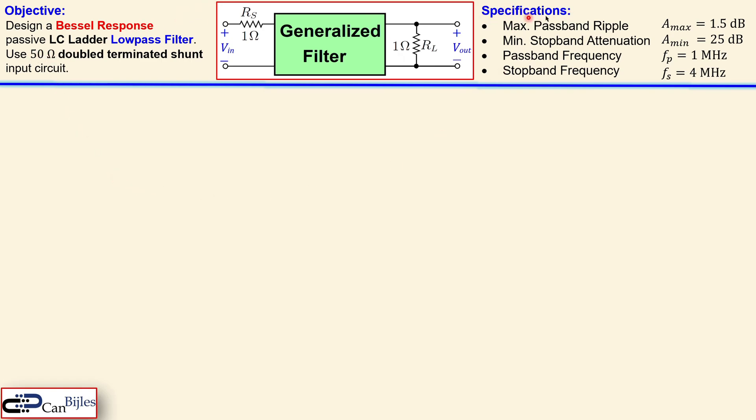In addition we need to have these specifications for our final design. The maximum passband ripple must be 1.5 dB which is a_max. The minimum stopband attenuation must be 25 dB and the passband frequency is 1 megahertz and the stopband frequency is 4 megahertz. So we need to use this data in order to calculate the required component values.